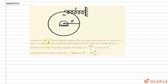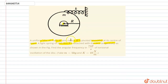The question says: a uniform disc of mass m and radius r is pivoted smoothly at the center of mass. A light spring of stiffness k is attached to the disc tangentially as shown in the figure. Find the angular frequency in radians per second of torsional oscillation of this disc.